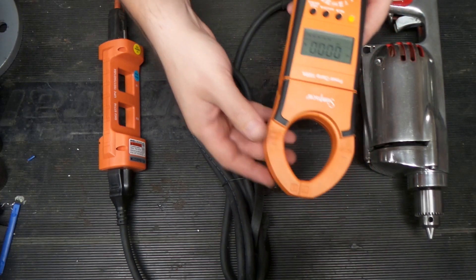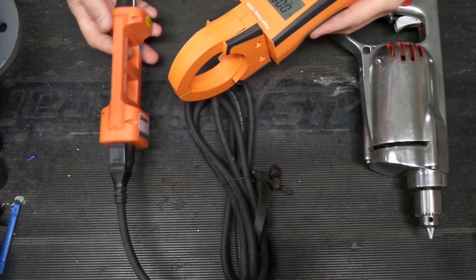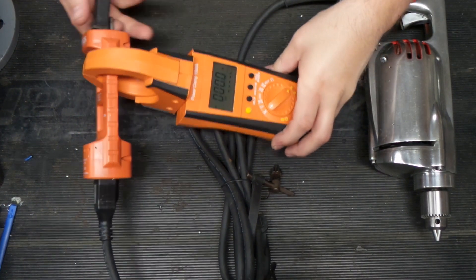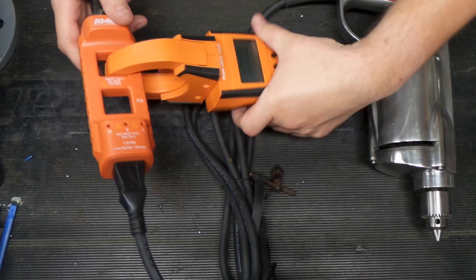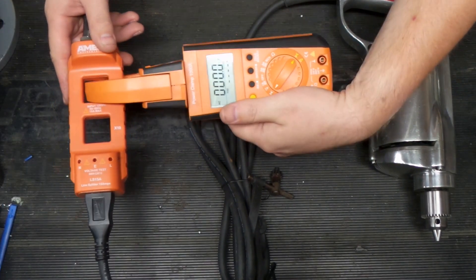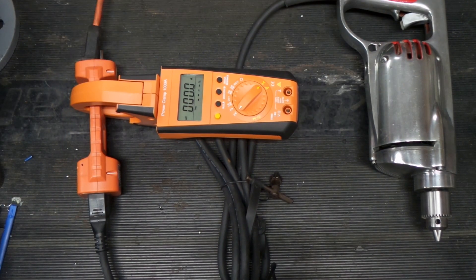And one nice thing about this meter, you can turn the amp probe around. So what we'll do is we'll go on the times one, so all you do is clip this in there just like that, open up your clamp, clamp it right through the hole, and we'll turn on our drill and see what we get.